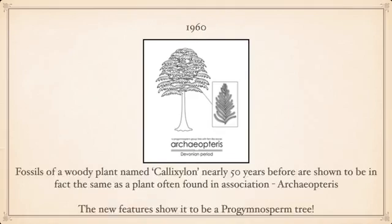The problem being, in 1960, they had been studying a woody plant named Kalyxylon, which had been named about 50 years prior. They discovered that Kalyxylon was in fact Archaeopteryx. This is something that's happened a lot in science — specimens get mistaken for one species or another when sometimes they turn out to be the same.